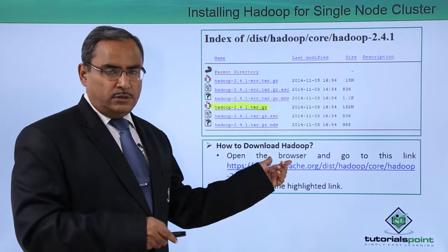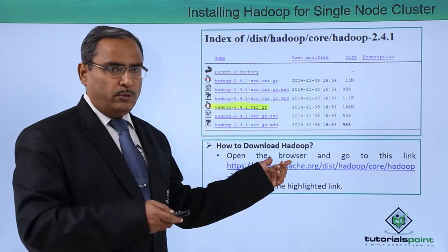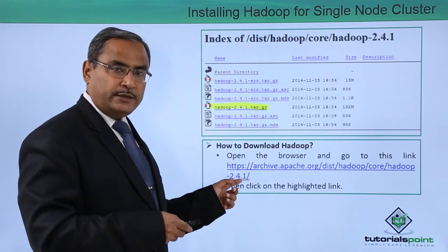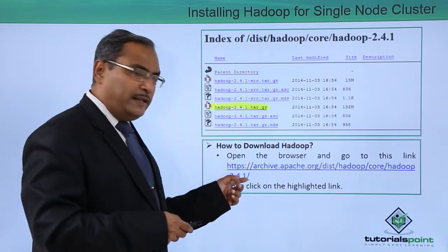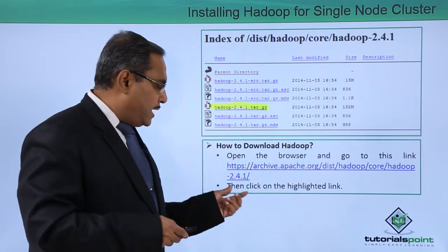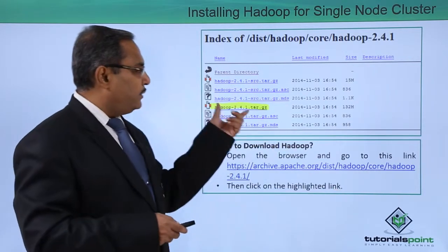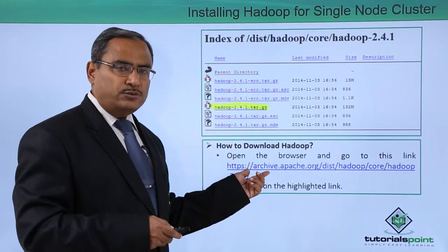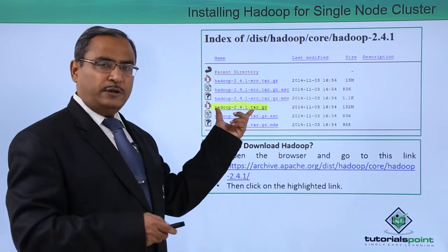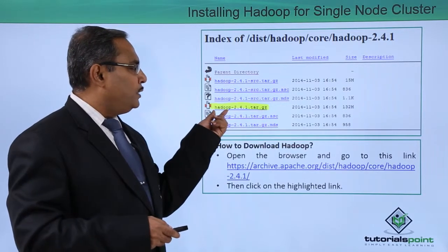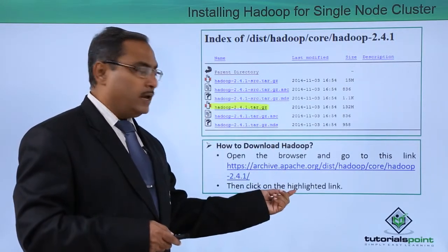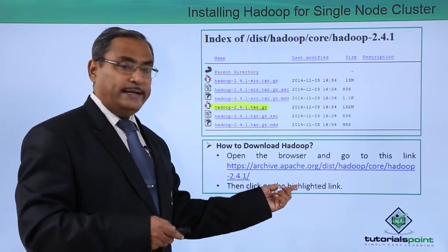Now open the browser. In Linux we will have one browser available. Open the browser and go to the particular link provided here. Just copy this link, type it in the browser URL, and click on the highlighted link. You will find that this web page opens and contains the file 'hadoop-2.4.1.tar.gz'. This is the file which has to be highlighted and clicked.